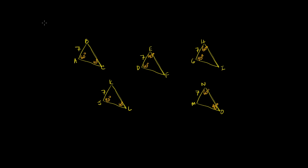We know that two triangles are congruent if all of their sides are the same — side, side, side. We also know they are congruent if we have a side, then an angle between the sides, and then another side — side, angle, side. If we reverse the angles on the sides, we know that's also a congruence postulate: angle, angle, side in between — angle, side, angle. And finally, if we have an angle, then another angle, and then a side — angle, angle, side. Any of these imply congruency.